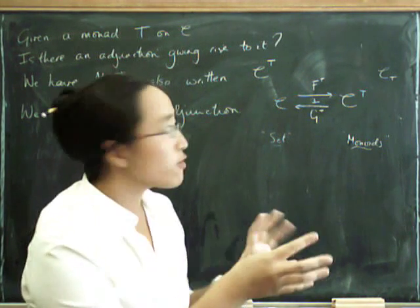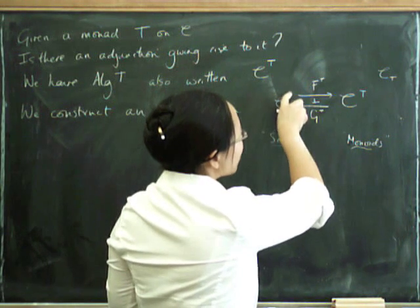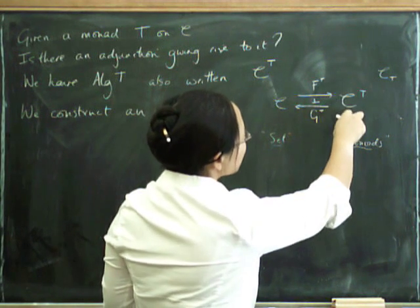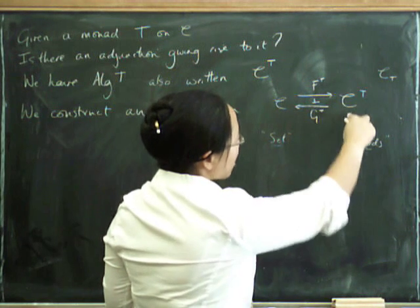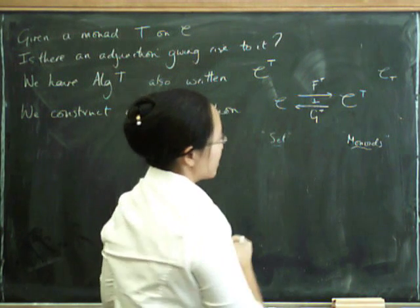This is going to guide our way through forming this adjunction, because we're going to make an algebra freely, start with an algebra over here, and forget back down to its underlying object C.